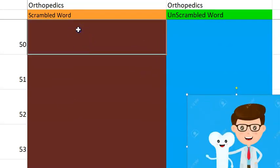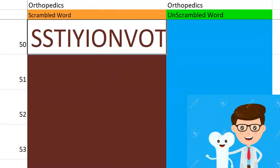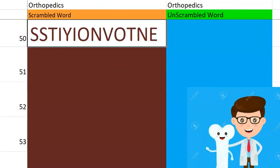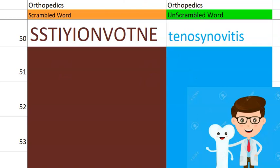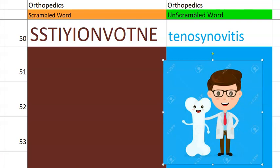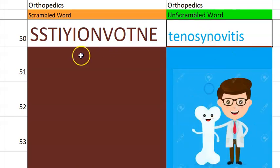Now let's go to the 50th one. Starts with a T — synovial something. Tenosynovitis. What is tenosynovitis? It is inflammation of the tendon and its respective synovial sheath — tendon and the synovial sheath inflammation.